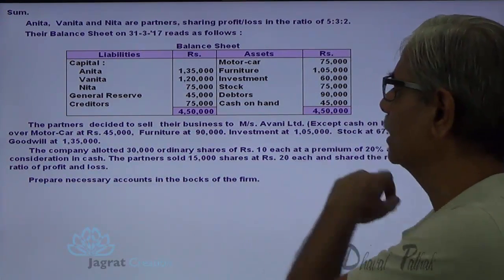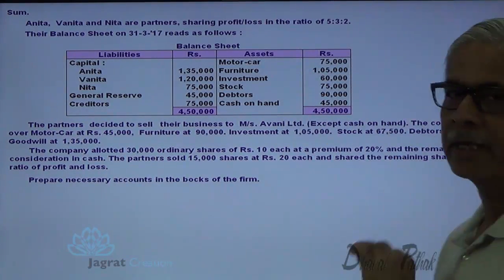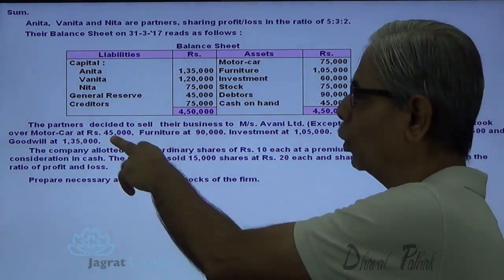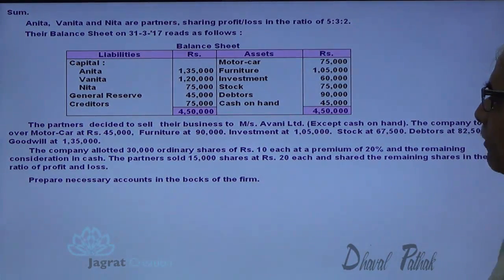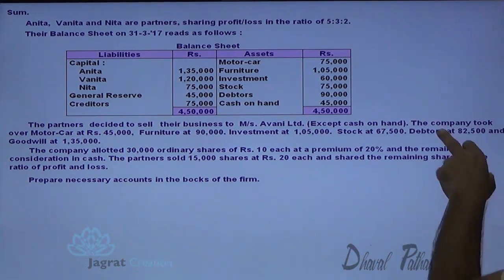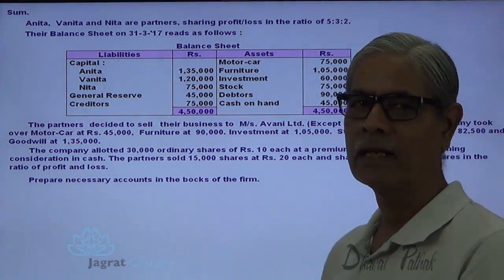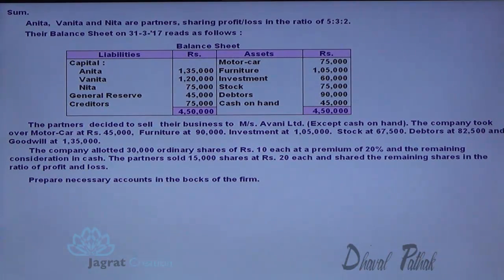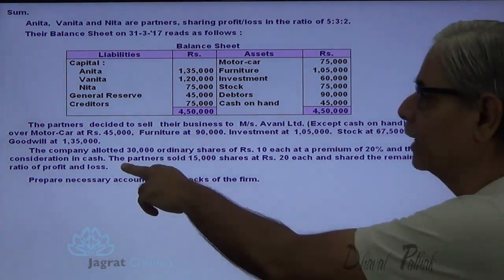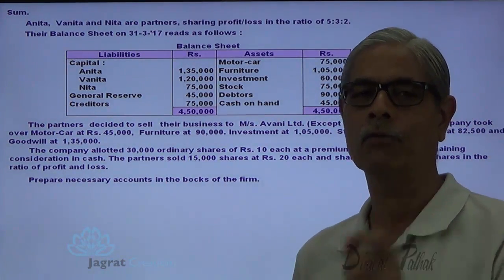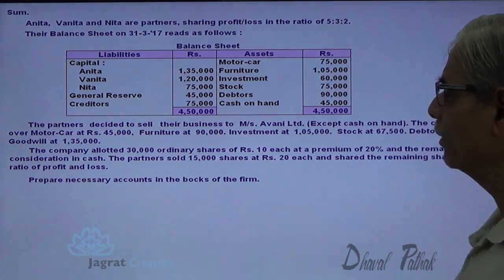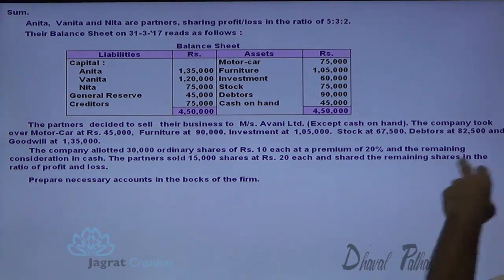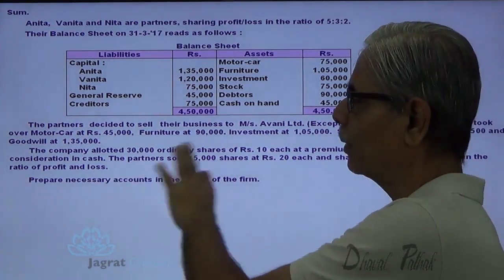The partners decided to sell the business to Avni Limited, except cash on hand. The company took over motor car at 45,000; furniture at 90,000; investment at 1,50,000; stock at 67,500; debtors at 82,500; and goodwill at 1,35,000. The company allotted 30,000 ordinary shares of Rs.10 each at a premium of 20%, and the remaining consideration is paid in cash. The partners sold 15,000 shares at Rs.20 each and the remaining shares in the profit and loss ratio.